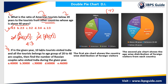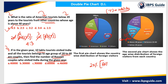Question 2: If in the given year 10 lakh tourists visited India, so total T is 10 lakh, and all tourists belonging to the age group of 20 to 40 years are couples, then find the number of Russian couples who visited India during the given year. This is straightforward. If I find 60% of 10 lakh I get the total number of Russian tourists, and among those, the 20 to 40 year group — which are couples — is 20%.